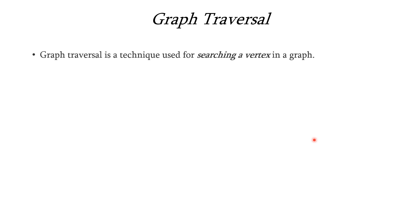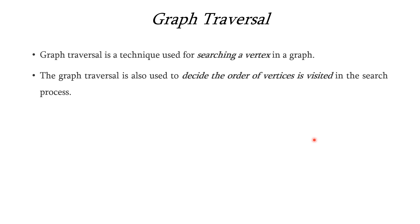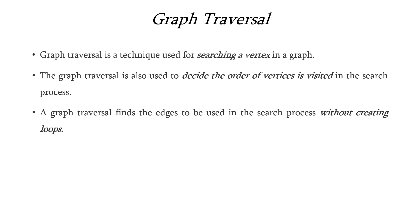So before going on to the DFS concept, let us understand what is graph traversal. Graph traversal is a technique which is used for searching a vertex in a graph. It also decides the order in which the vertices are visited during the search process, and it finds the edges to be used in the search process without creating any loops.